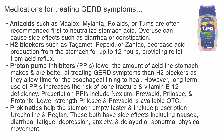There are several over-the-counter and prescription medications used for treating GERD symptoms. Antacids such as Maalox, Mylanta, Rolaids, or Tums are often recommended first to neutralize stomach acid. Overuse can cause side effects such as diarrhea or constipation. H2 blockers such as Tagamet, Pepcid, or Zantac decrease acid production from the stomach for up to 12 hours providing relief from acid reflux. Proton pump inhibitors lower the amount of acid the stomach makes and are better for treating GERD symptoms than H2 blockers as they allow time for the esophageal lining to heal.